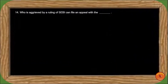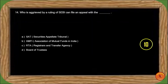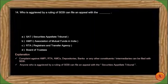Next question: Who is aggrieved by a ruling of SEBI and can file an appeal with whom? AMFI, RTA, AMCs, depositories, or other constituents and intermediaries can file complaints against each other with SEBI. Anyone who is not satisfied with a ruling of SEBI can file an appeal with the Securities Appellate Tribunal, i.e., SAT. So the correct answer is option A, SAT.